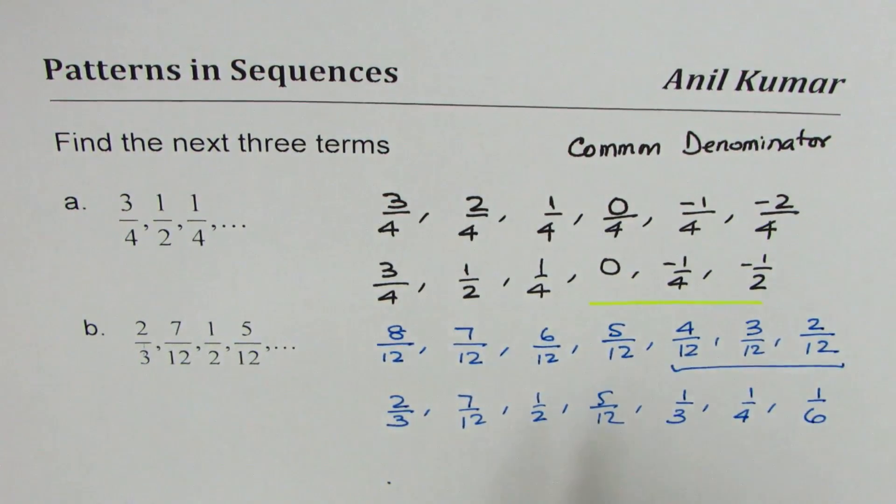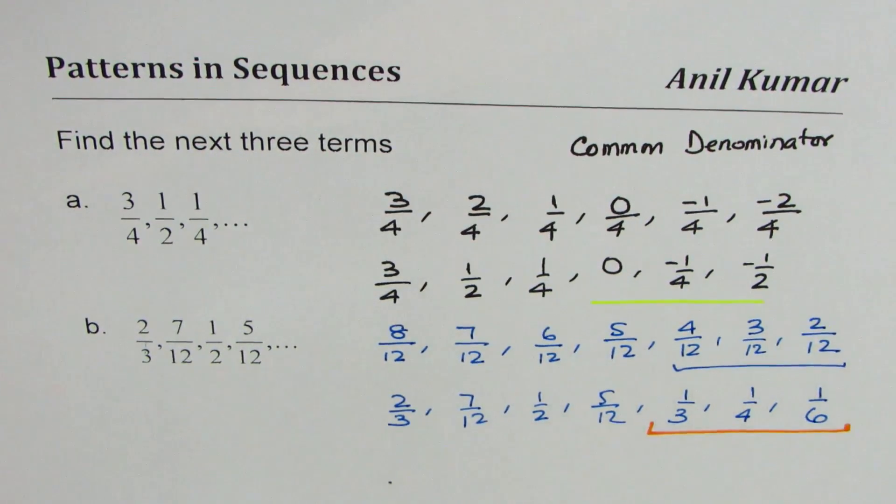So the next three terms for the second sequence are 1/3, 1/4, and 1/6.